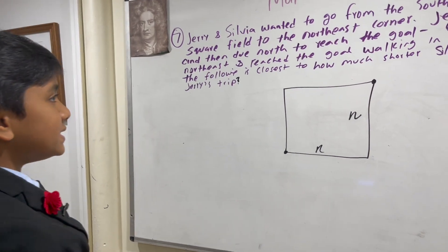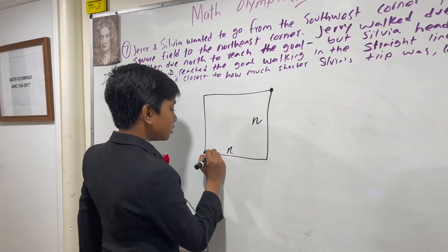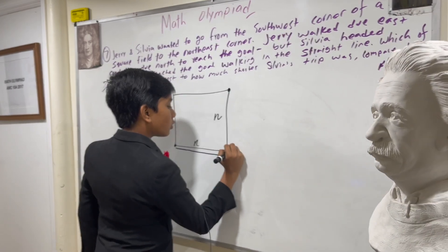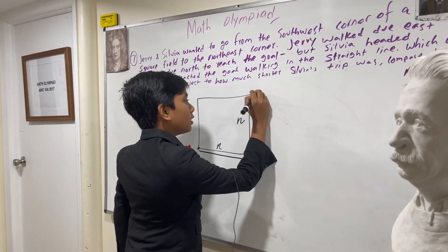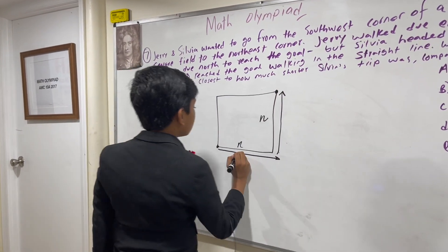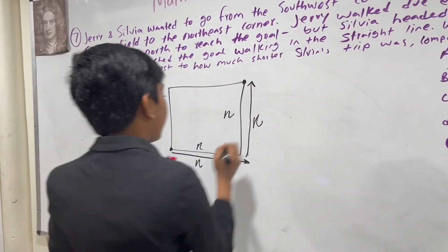Jerry walked east and then north. Both of these trips would have taken a length of N.